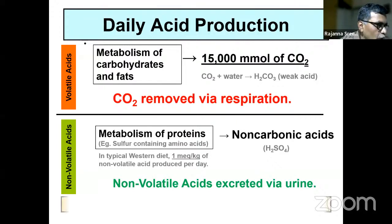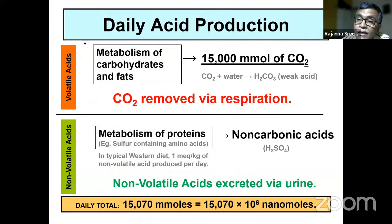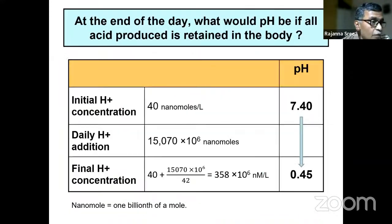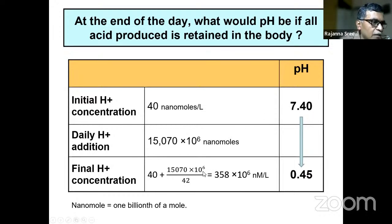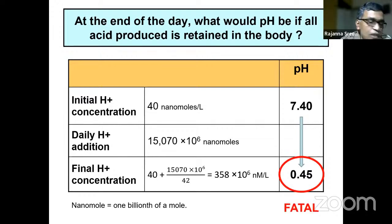In a normal Western diet, about 1 milliequivalent per kg of non-volatile acids are also produced — for example, from sulfur-containing or phosphorus-containing amino acid metabolism — generating non-carbonic acids such as sulfuric acid or phosphoric acid. These non-volatile acids are effectively removed by the kidney. Every day about 15,070 millimoles of acid is produced and must be removed; otherwise, pH would drop from 7.40 to 0.45, which is fatal — life cannot exist at that pH.